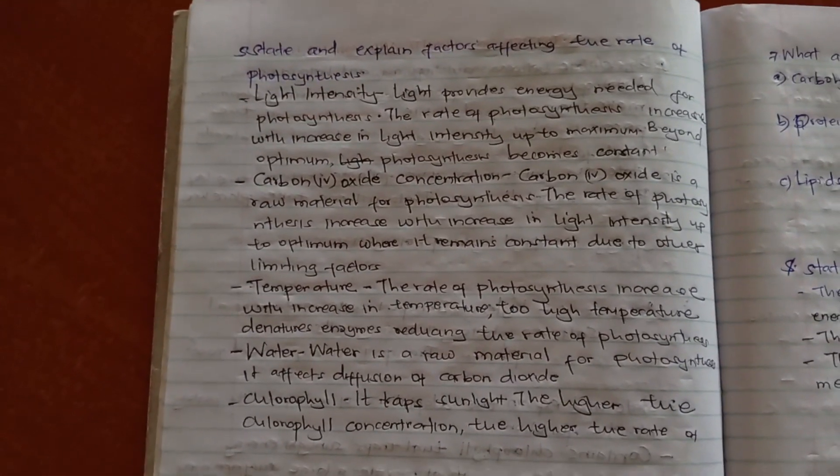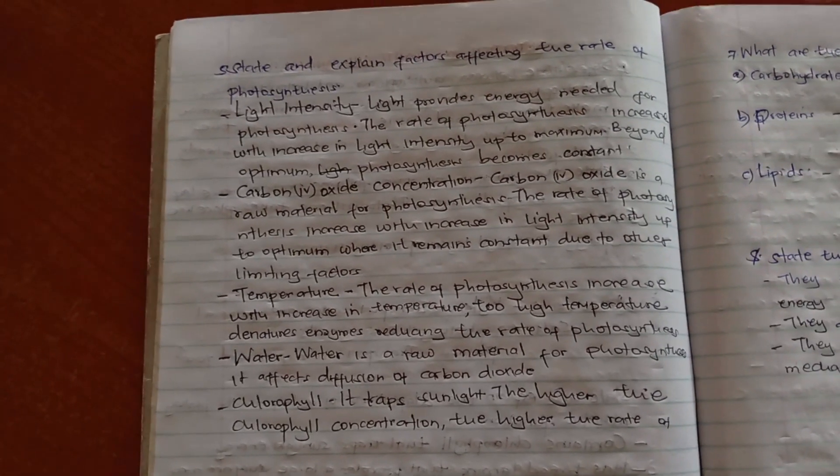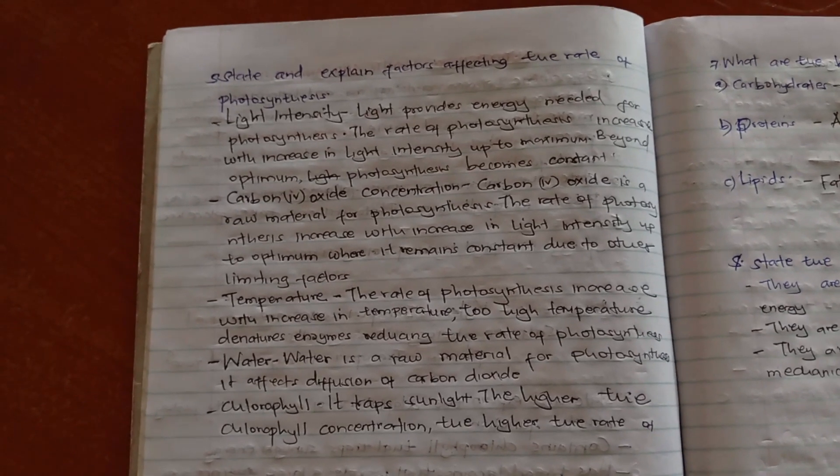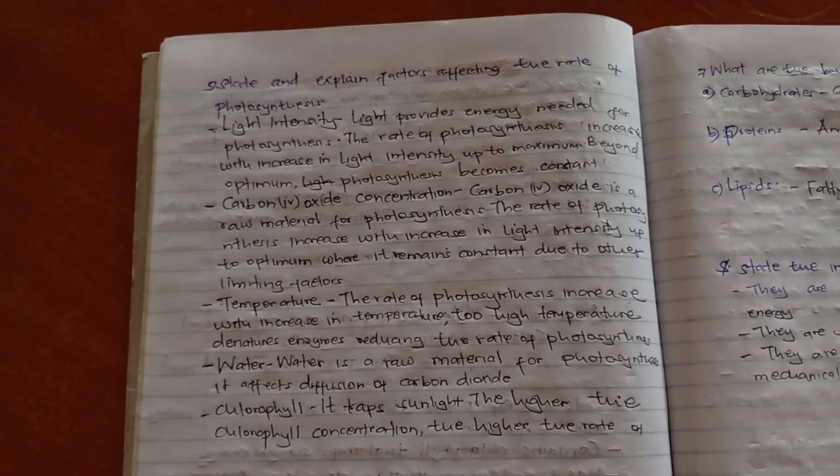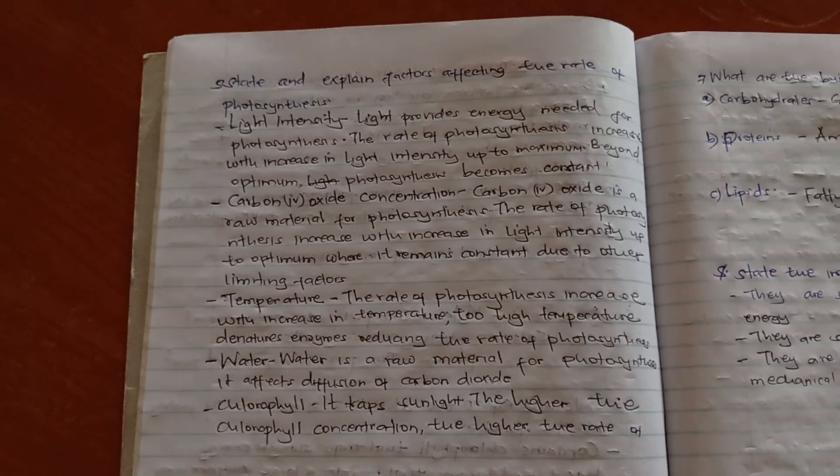State and explain factors affecting the rate of photosynthesis. The first factor is light intensity. Light provides energy for photosynthesis. So the rate of photosynthesis increases with increase in light intensity up to an optimum point.